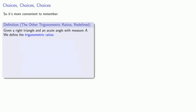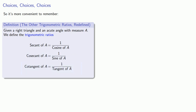It's actually more convenient to remember these other three trigonometric ratios as follows: secant is 1 over cosine, cosecant is 1 over sine, and cotangent is 1 over tangent.